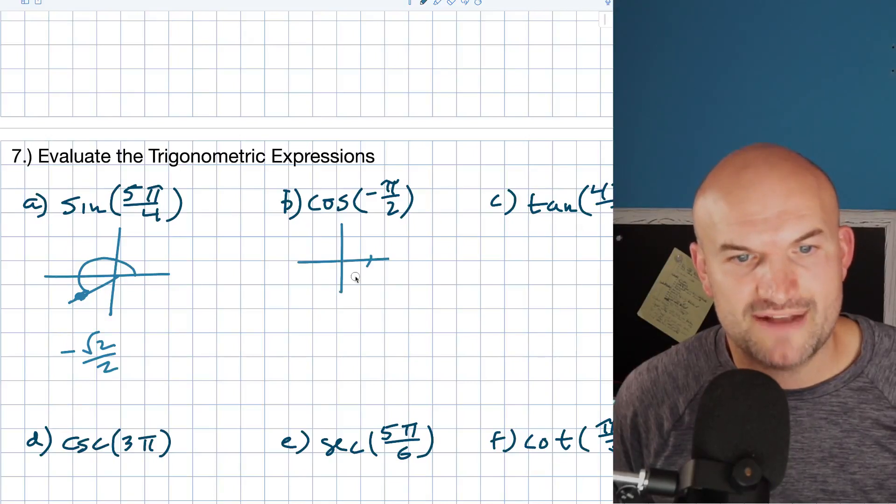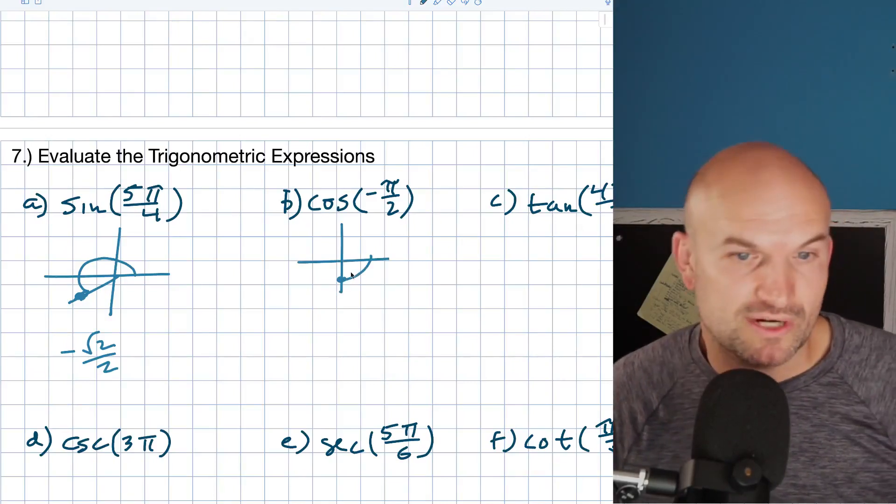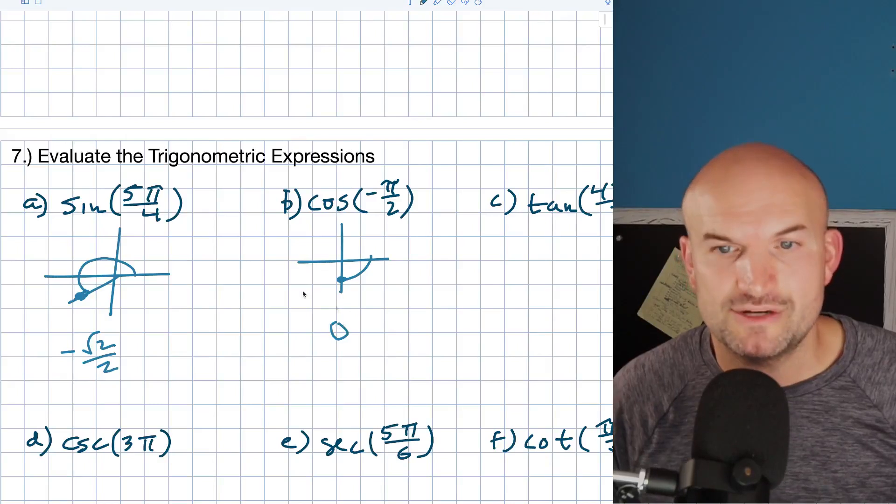Over here, my answer negative π halves is right there. The x coordinate in that case is going to be a 0.